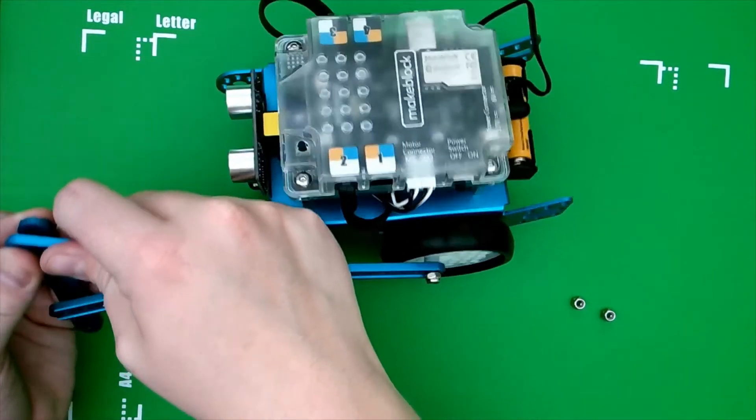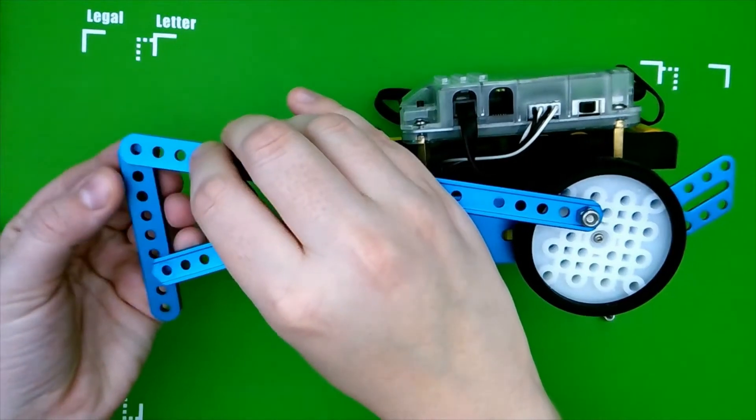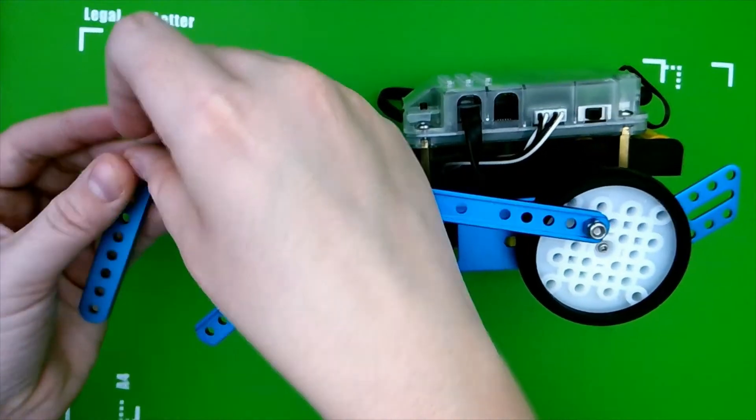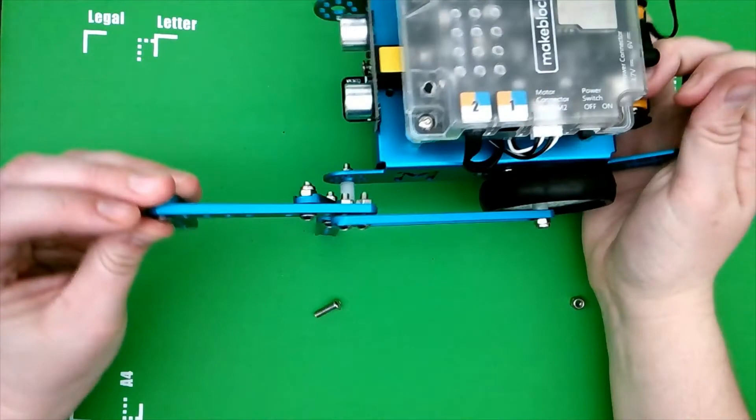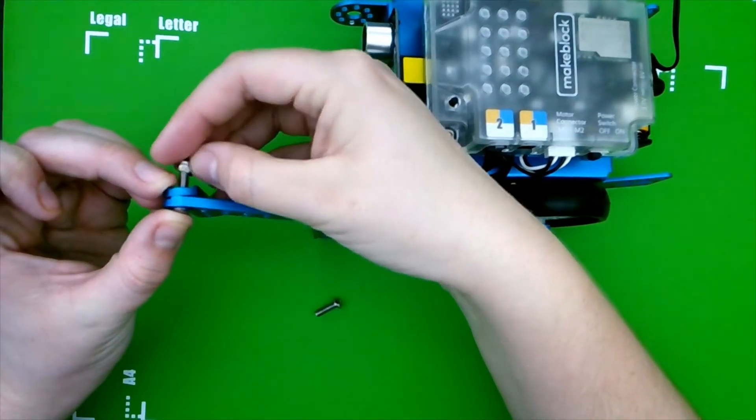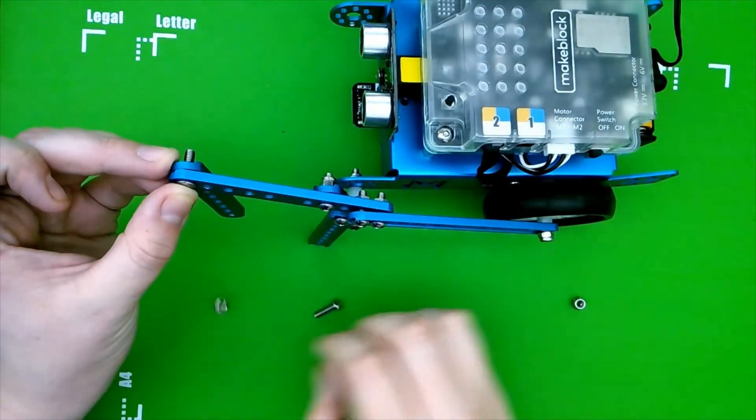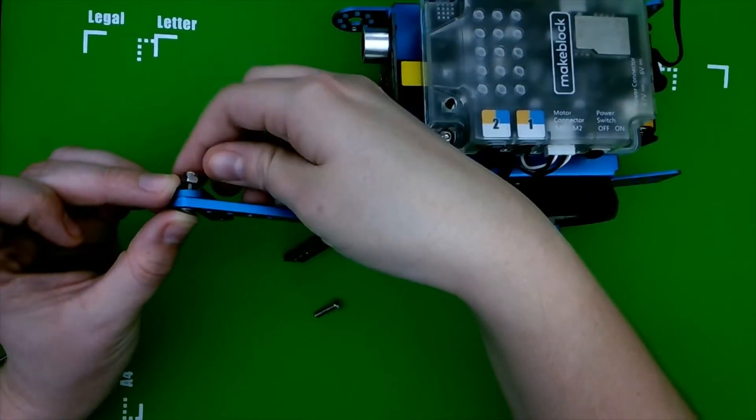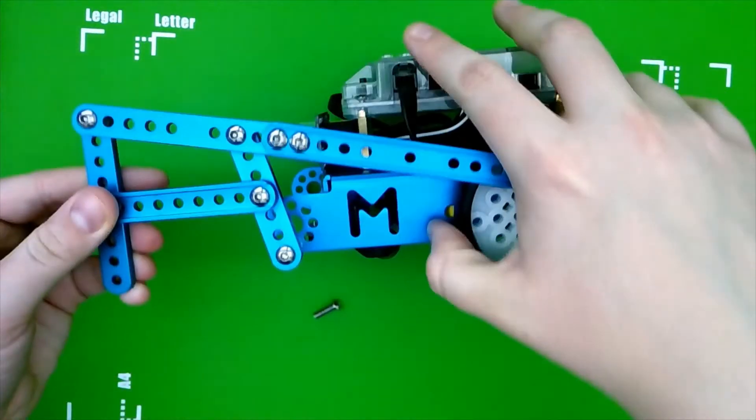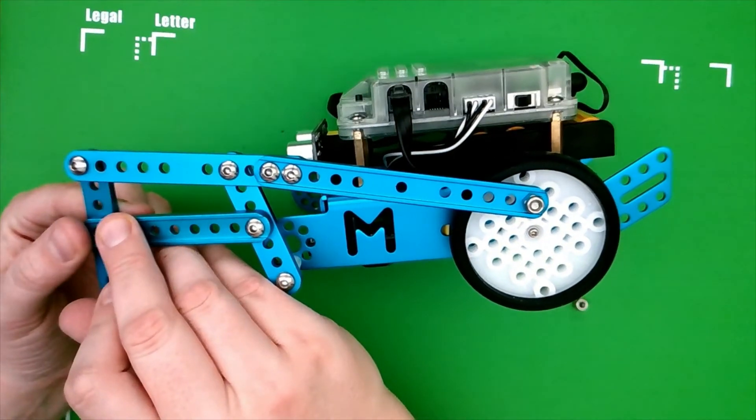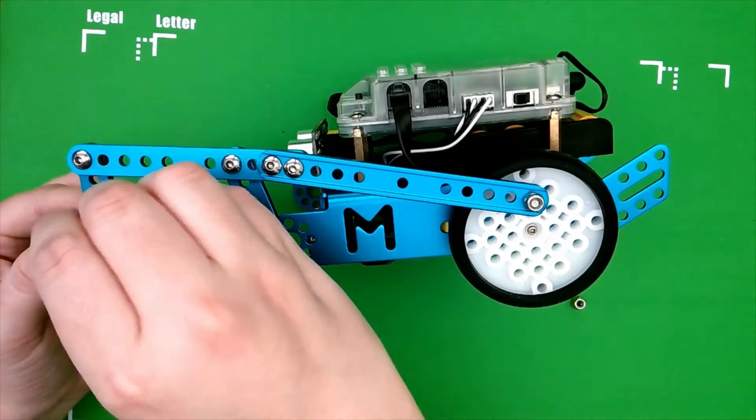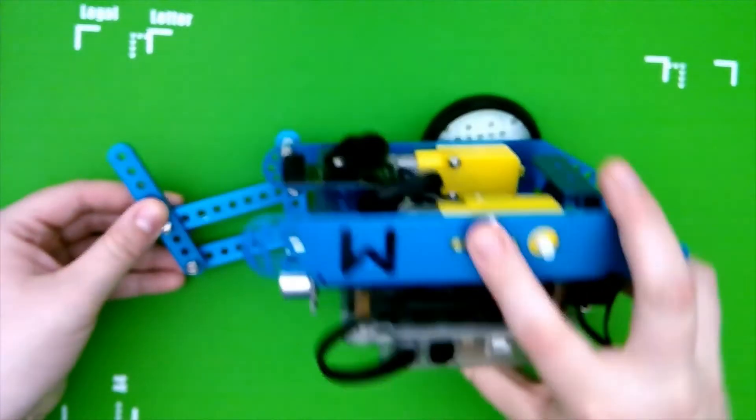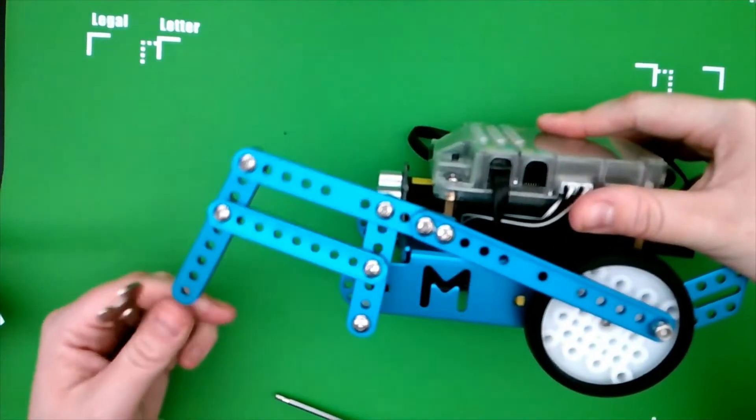So you're going to attach it to this first hole, and then to the other side skip two holes so it'll be right here. And then you're just going to slightly tighten these. Okay, like that. Keep it pretty loose.